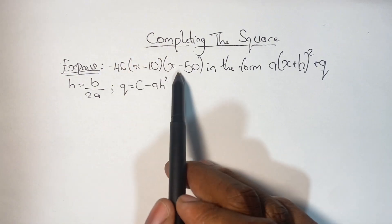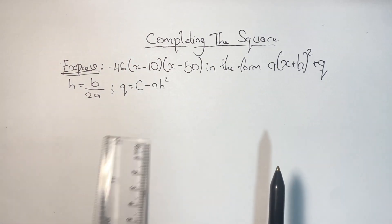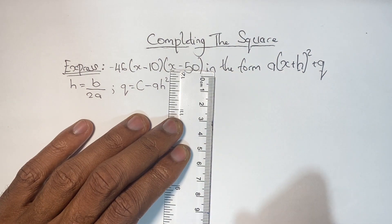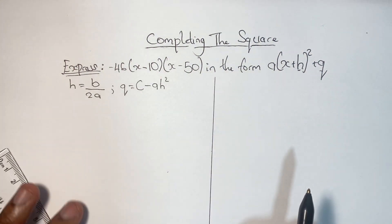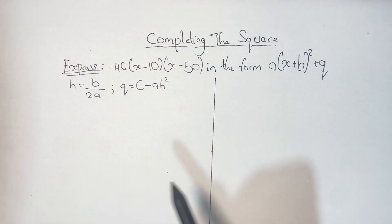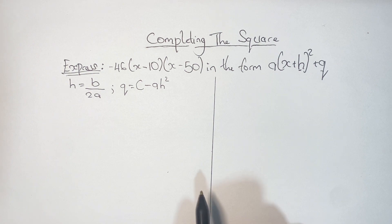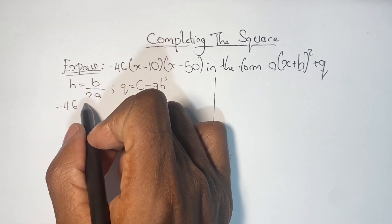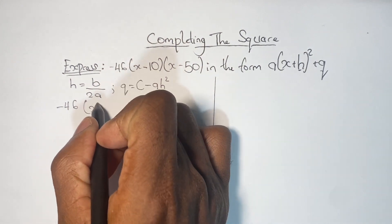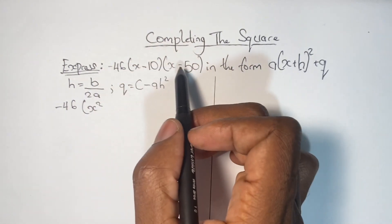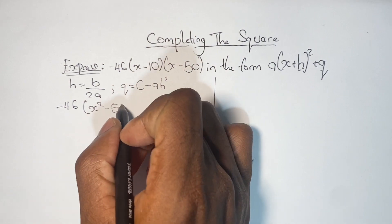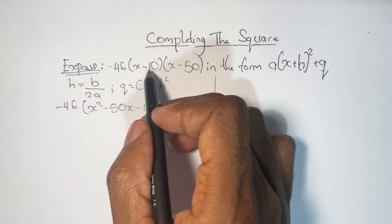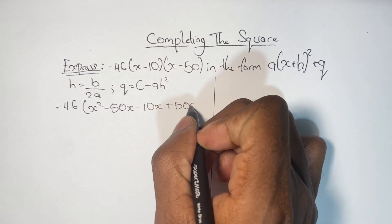Our first step in solving our problem is to actually expand our brackets. I'm going to divide my work area into two parts because I'm going to have two workout solutions. In expanding my brackets, I'm going to keep the negative 46 outside. Then X times X is X squared. X times negative 50 gives us negative 50X. Negative 10 times X gives us negative 10X. And negative 10 times negative 50 gives us positive 500.